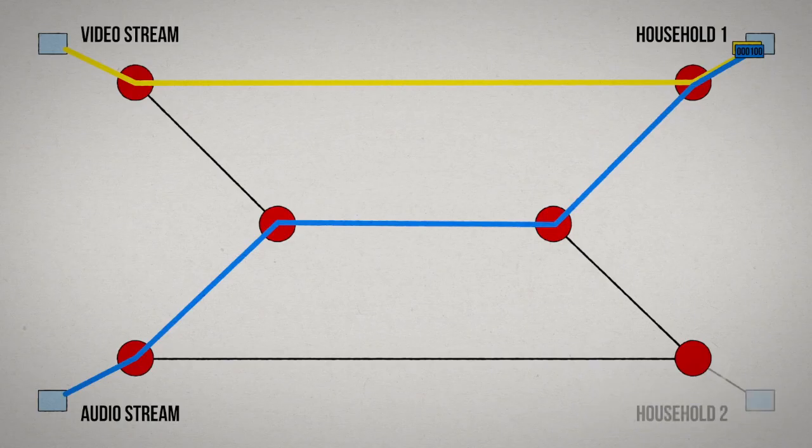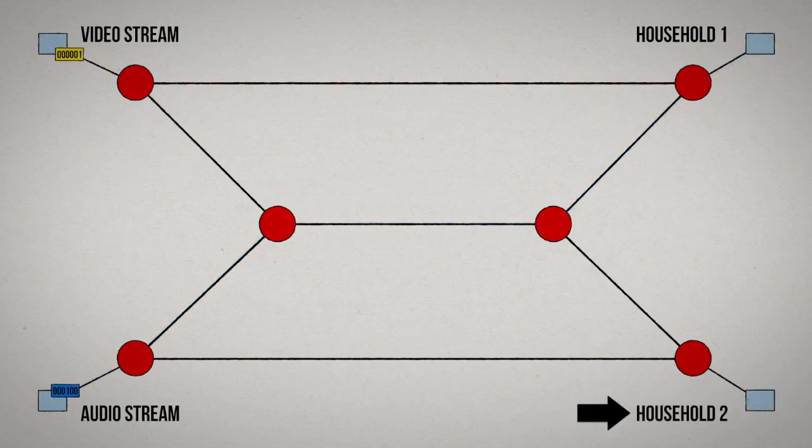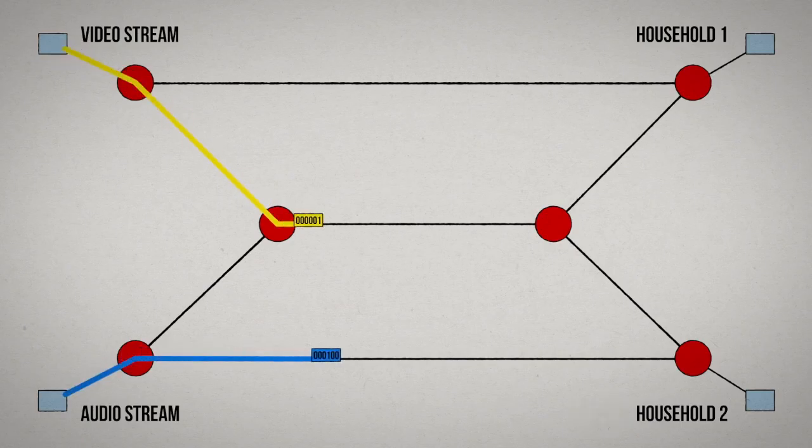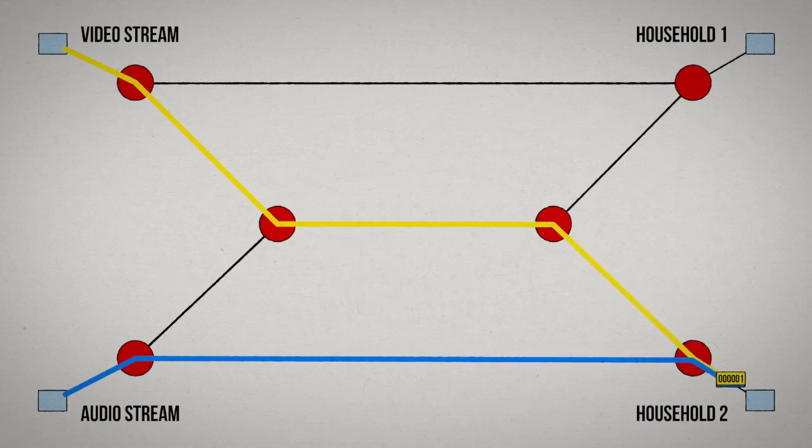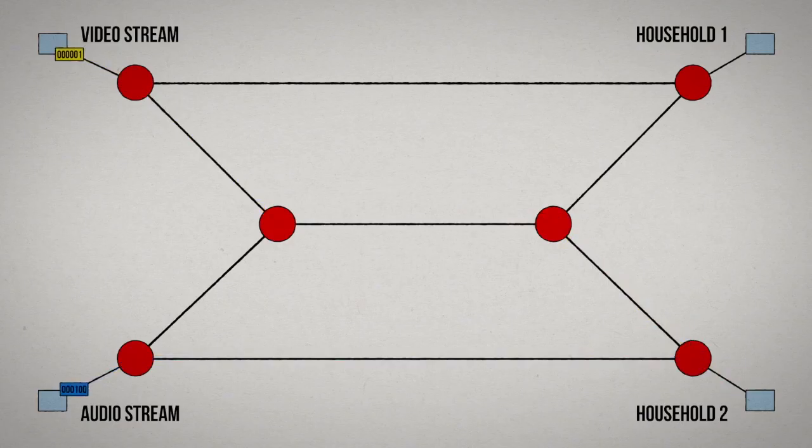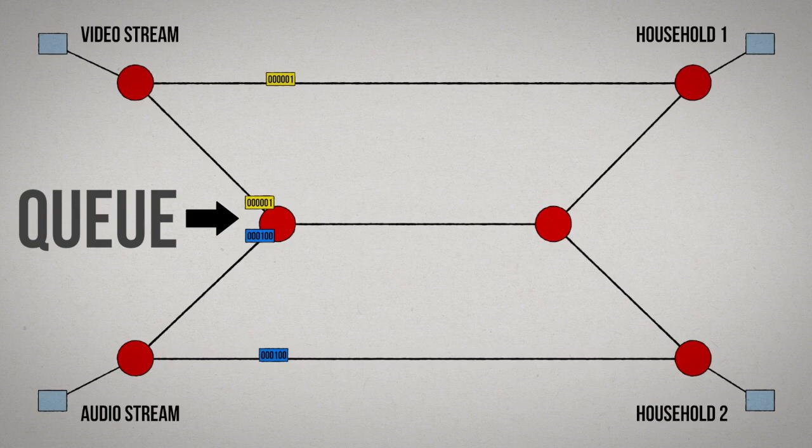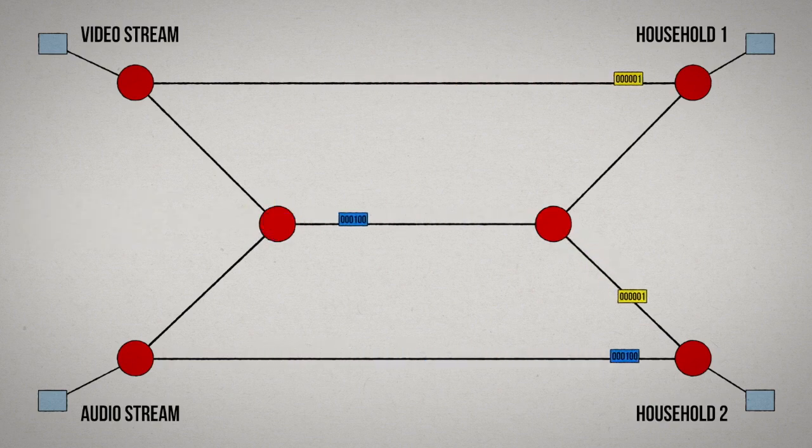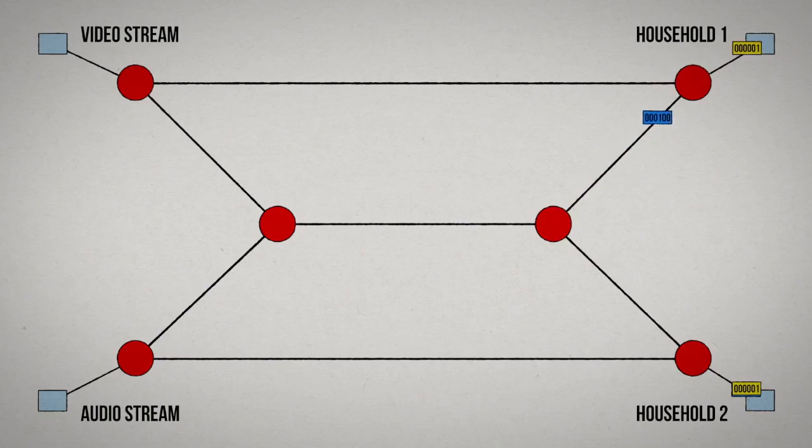But now let's add another household to the network in a separate city, and assume they also want the identical audio and video streams. Perhaps they're popular shows. They have a direct pathway to the music source, but they need the middle path to get their video source. This causes a waiting line, or queue, to develop, so the hub will transmit two packets down the line, one after the other. This is what we mean when we say the network is slowing down.